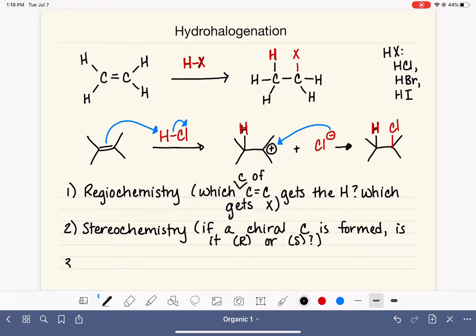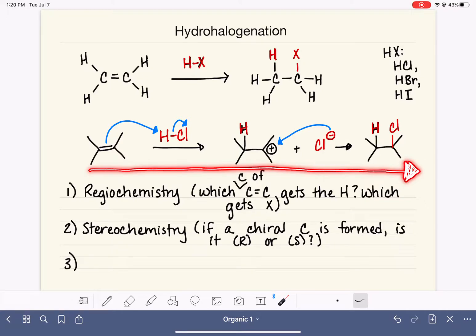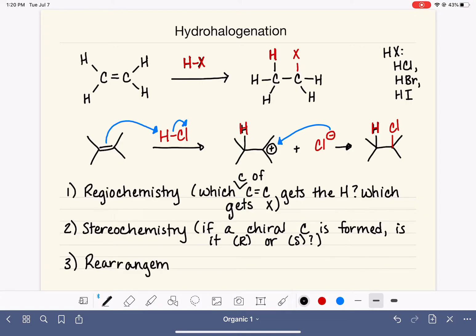The third thing we need to consider is carbocation rearrangement. This is always going to be a two-step mechanism. This is not like SN1 versus SN2 or E1 versus E2. We are always forming a carbocation at the end of step one. So we do also have to consider rearrangement of the carbocation. When we get to this step, if our carbocation can rearrange to something more stable, it will.